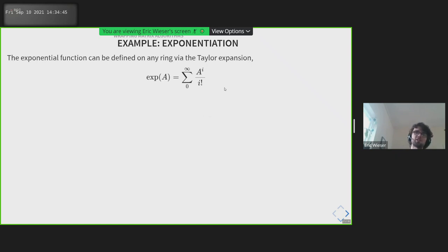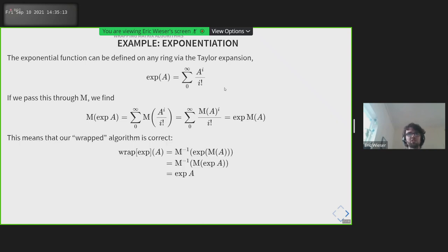Let's look at a slightly more interesting example of a function we might want to apply this technique to. We should all be familiar with the exponential function and how it can be defined via a Taylor expansion, and this will work on any ring, so it works on matrices, multivectors, and the reals. If we pass this through the M function, we can distribute M over the summation, the division, and the power, and we can see that our M conversion from multivectors to matrices also preserves the exponentiation.